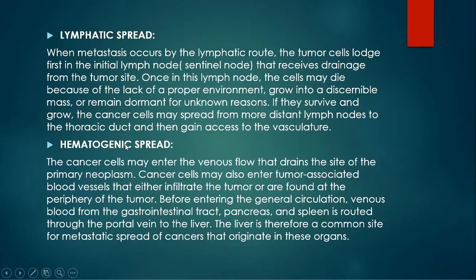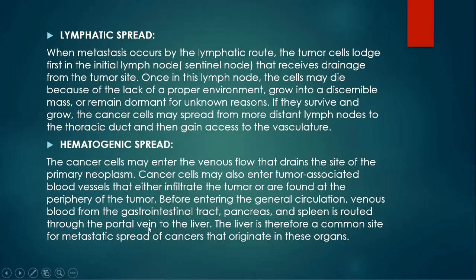Hematogenic spread is via blood. Cancer cells may enter the venous flow that drains the site of the primary neoplasm, or enter tumor-associated blood vessels at the periphery of the tumor. Venous blood from the GI tract, the pancreas, and the spleen crosses the liver via the portal vein before moving to the heart. Therefore, the liver is a common site for metastatic spread of cancers originating in these organs.